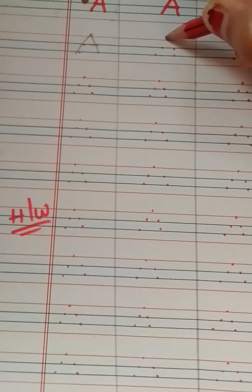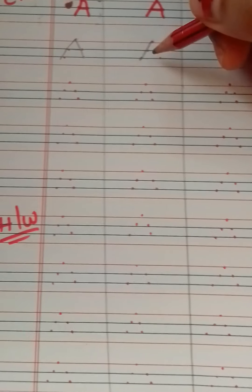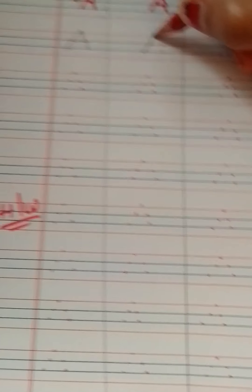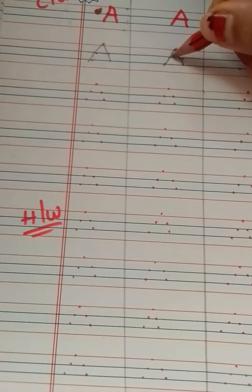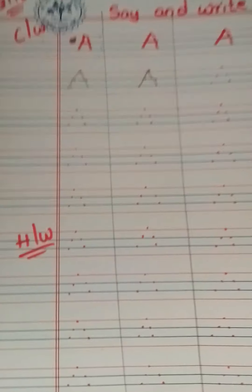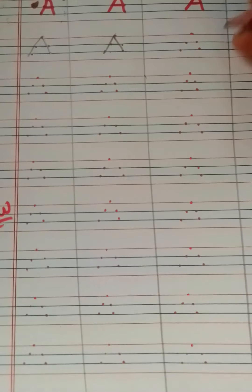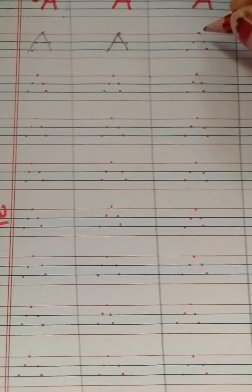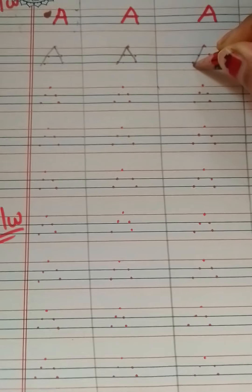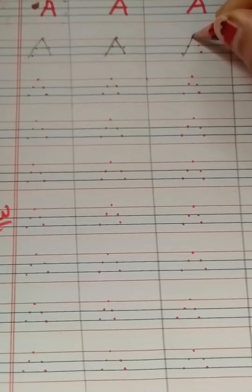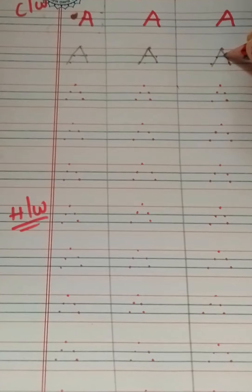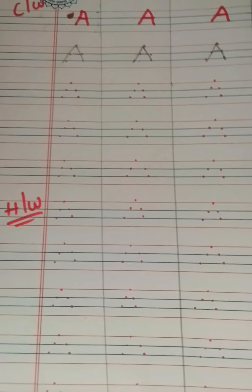Top line to second middle line — one more slanting line. It's A. Like this you have to write. Again: top line to second middle line — slanting line, slanting line, and top line to second middle line — one more slanting line, sleeping line. A.